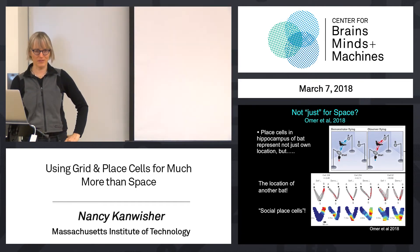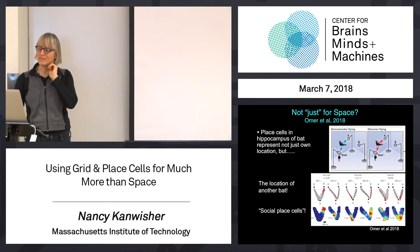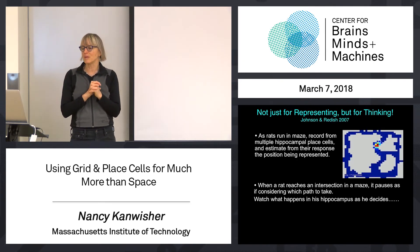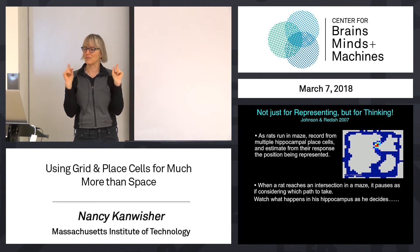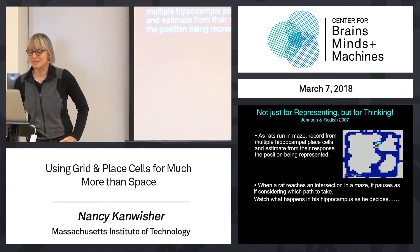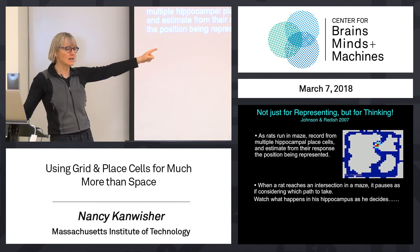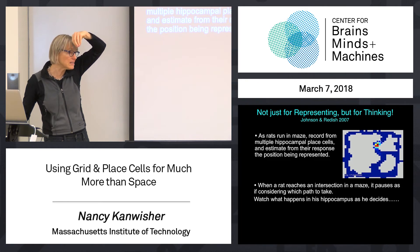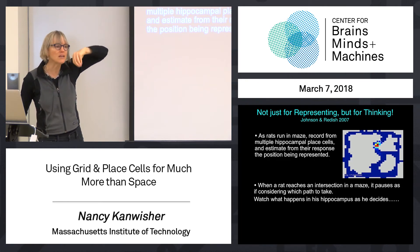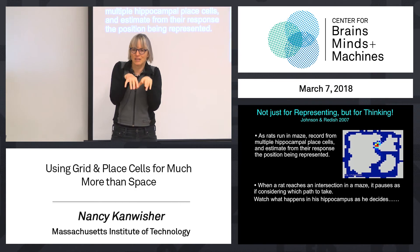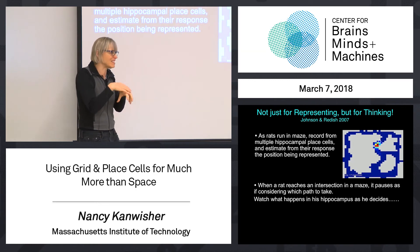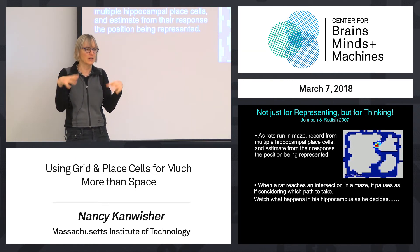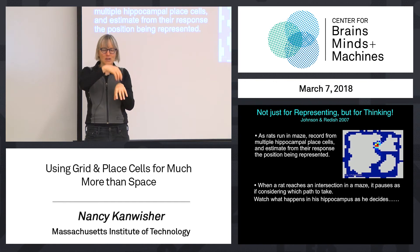But in some ways, the coolest thing is actually an older paper that shows that place cells are used not just for representing space, concepts, or social structures, but for thinking. This is a case where these guys had rats running in mazes. They recorded from a bunch of hippocampal place cells at once, and used that information — you're recording from a bunch of place cells, you could read out the location of that animal. You could do some math, machine learning, whatever, on the response and you'd know where that animal is right now.